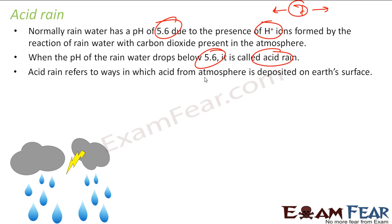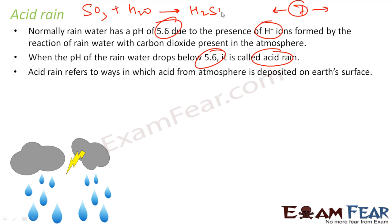Why is acid rain formed? Acid rain is nothing but a way in which acids from the atmosphere are deposited onto Earth's surface. For example, SO₃ is an acid gas — it reacts with water vapor in the atmosphere and you get H₂SO₄, and that comes to Earth as acid rain.